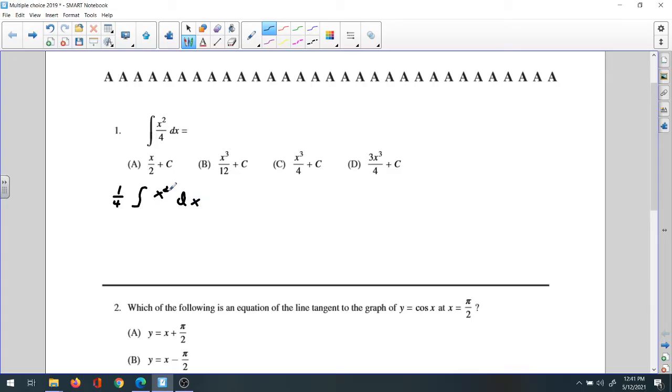we add 1 to the power to be x to the third over 3, and we have 1/4 outside, that's plus constant. So x exponent 2 plus 1, that's the new exponent, divide by the new exponent times 1/4. Then it will be x to the third times 1 is x to the third, 3 times 4